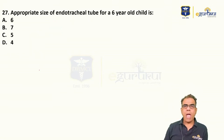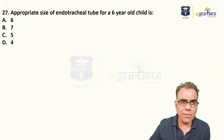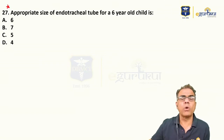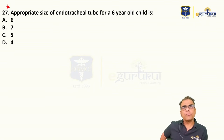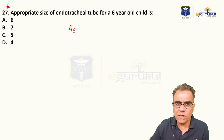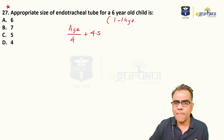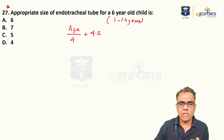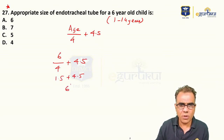Question twenty-seven: Appropriate endotracheal tube size for a 6-year-old child — 6, 7, 5, or 4? There is now a single formula for ages 1–14 years: age in years divided by 4, plus 4.5. For a 6-year-old: 6÷4 + 4.5 = 1.5 + 4.5 = 6. Answer: size 6.